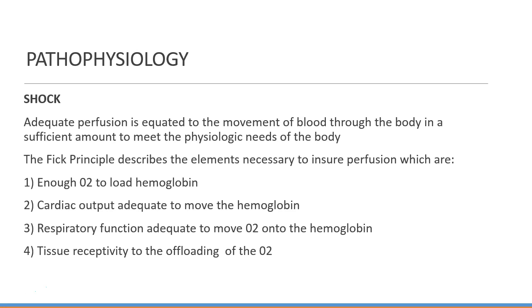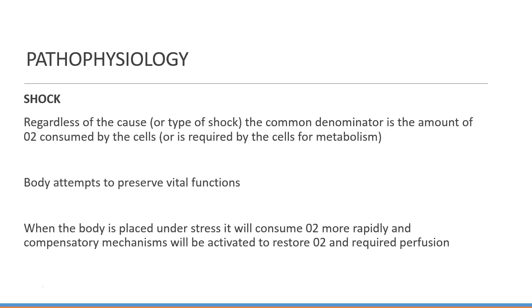Adequate perfusion is related to the movement of blood through the body in sufficient amounts to meet the physiologic needs of the body. The Fick Principle describes the necessary elements to ensure perfusion: enough oxygen to load hemoglobin, cardiac output adequate to move the hemoglobin, respiratory function adequate to move O2 to the hemoglobin, and tissue receptivity to offloading of the oxygen. Regardless of the cause or type of shock, the common denominator is the amount of O2 consumed — or required — by the cells. When the body is placed under stress, it will consume oxygen more rapidly, and the Fick Principle mechanisms activate to restore O2 and required perfusion.